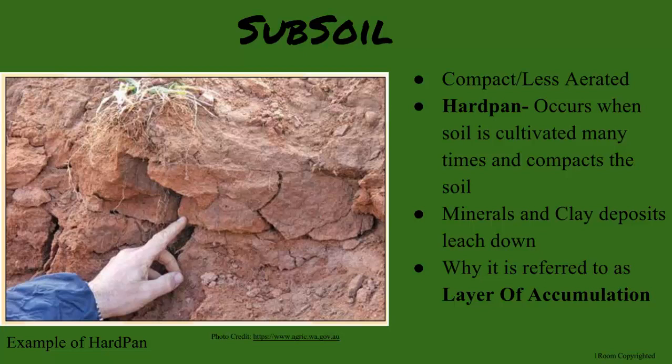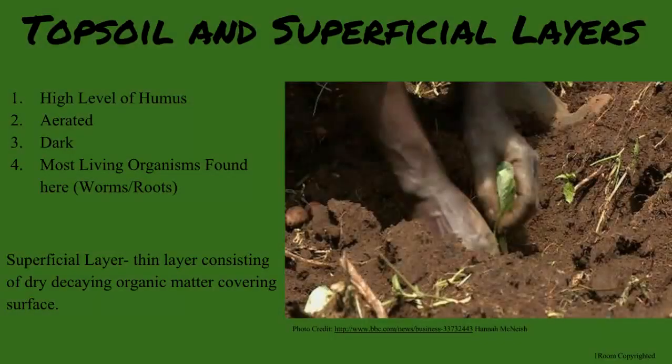I know topsoil. It is the uppermost layer and has a high humus content. It is very aerated, dark, and contains a lot of living organisms like worms and plant roots. And do not forget about the superficial layer. This is just the decaying material covering the ground.